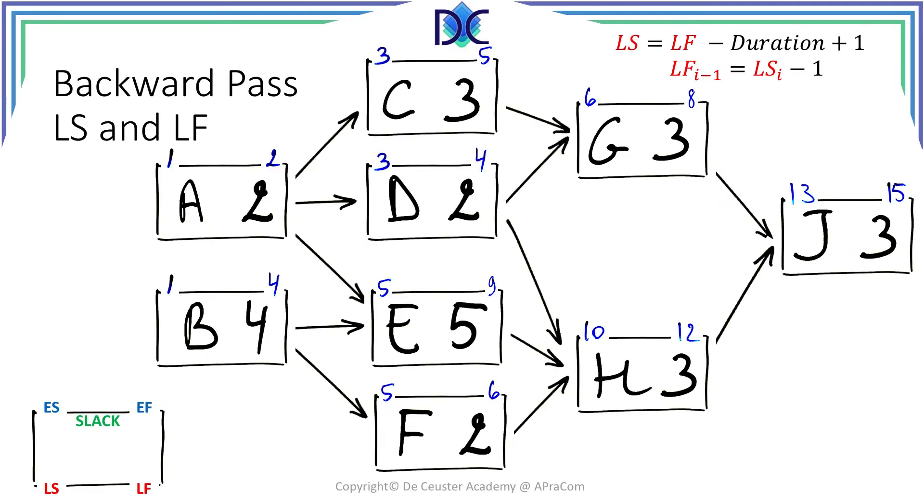Let's have a look at the backward pass. Here you see the precedence diagram with the early start and early finish information. On the left bottom you see again the legend related to the note. We are interested this time in the late start and the late finish. You will see them as red numbers under the activity notes.